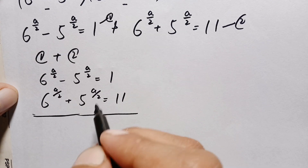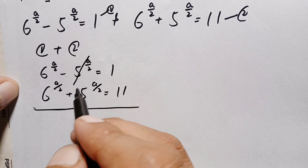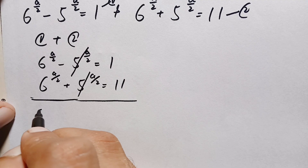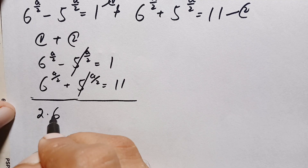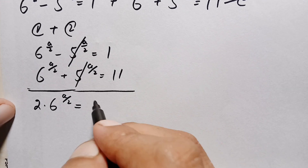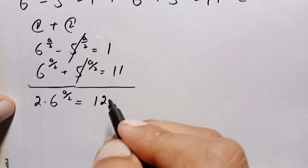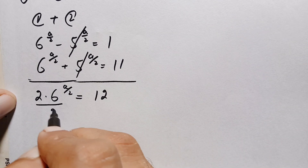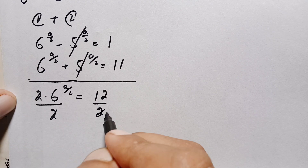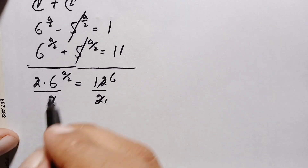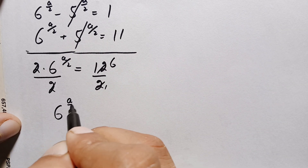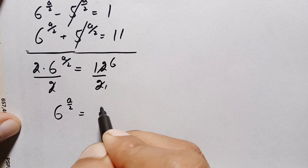By summing these two equations, the negative 5 raised to power a/2 and positive 5 raised to power a/2 cancel. This gives 2 times 6 raised to power a/2 equals 1 plus 11, which is 12. Dividing both sides by 2, the equation becomes 6 raised to power a/2 is equal to 6.